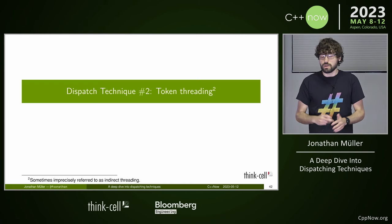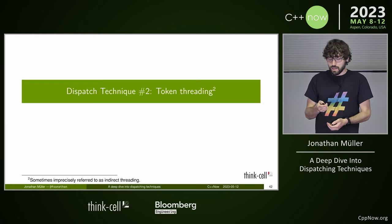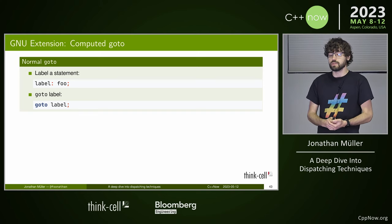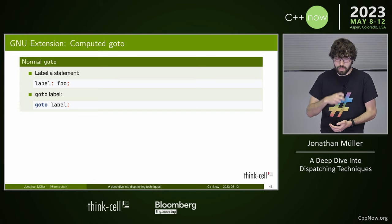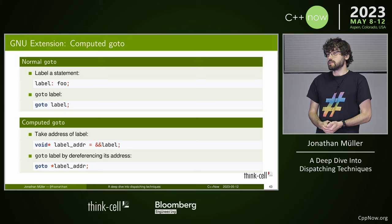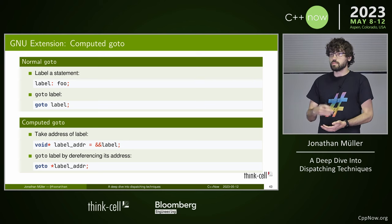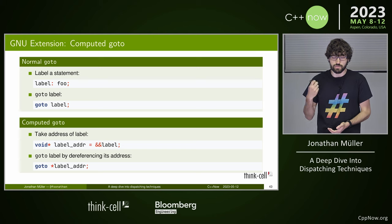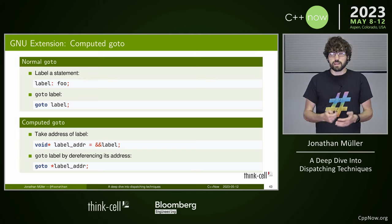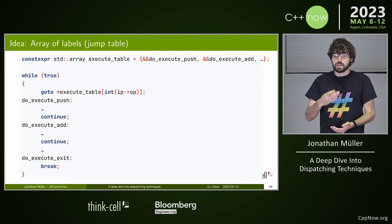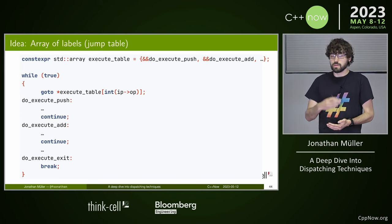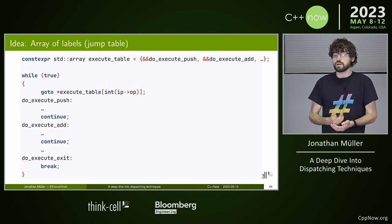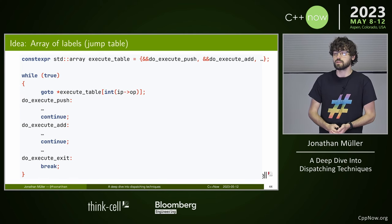A different dispatching technique is token threading, sometimes called indirect threading. The idea is to leverage a GNU extension called computed goto. With computed goto, we can take the address of a label using the double-ampersand operator, store it, and then go to that stored address. Instead of an array of function pointers, we have an array of labels — one for each instruction handler — and instead of calling a function, we just goto that label. After executing a bytecode handler, we go back and dispatch the next one.